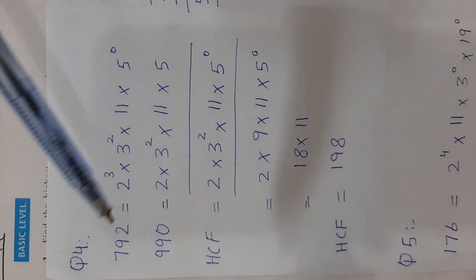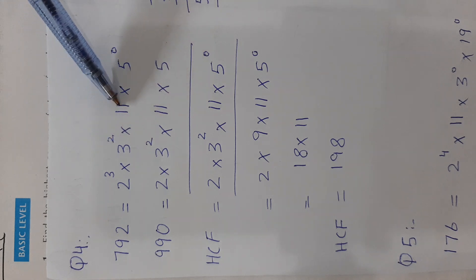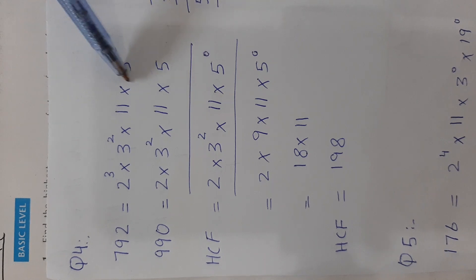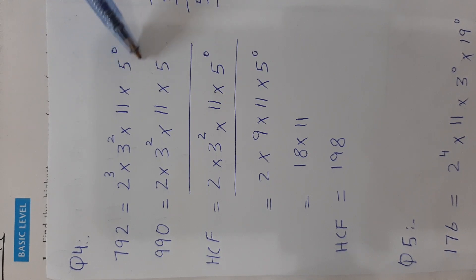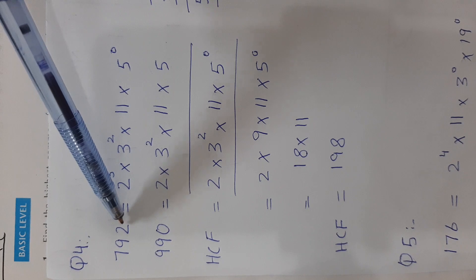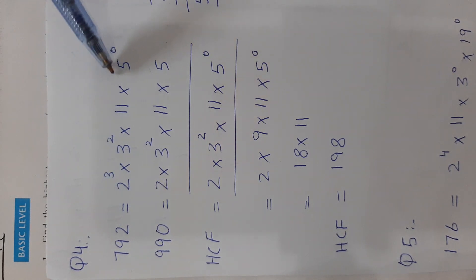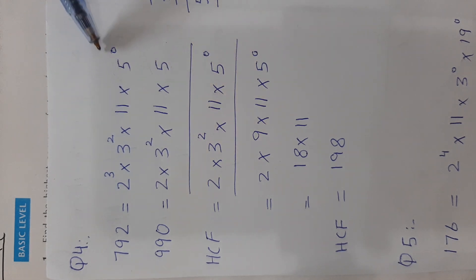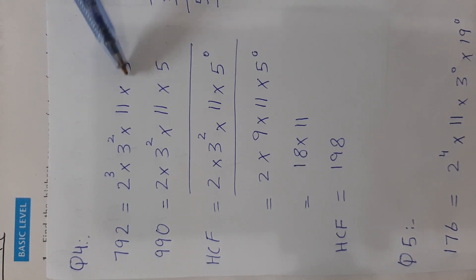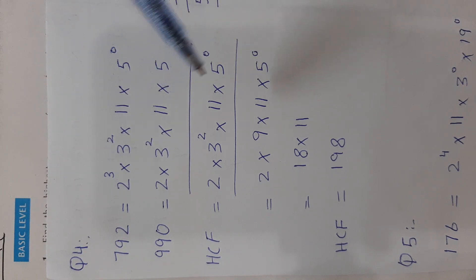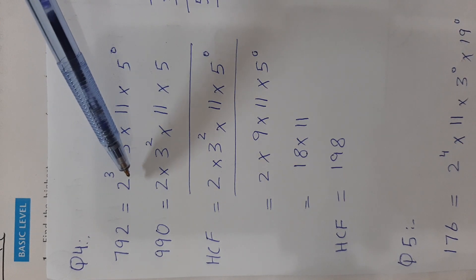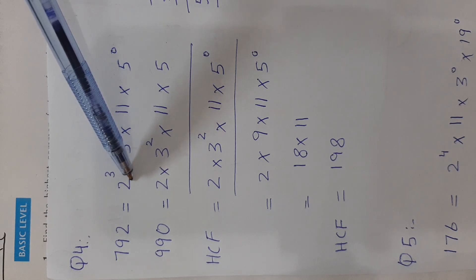The factors of 792 are 2³, 3², 11 and the factors of 990 are 2, 3², 11, and 5. The factor 5 is missing from 792, so enter 5⁰ to complete the column. When a factor is missing in any line, enter it with power 0. Because we have to find the HCF, take out the number with the lowest power from each column.